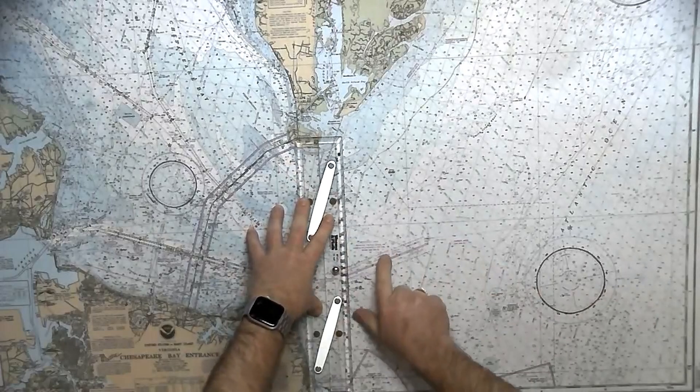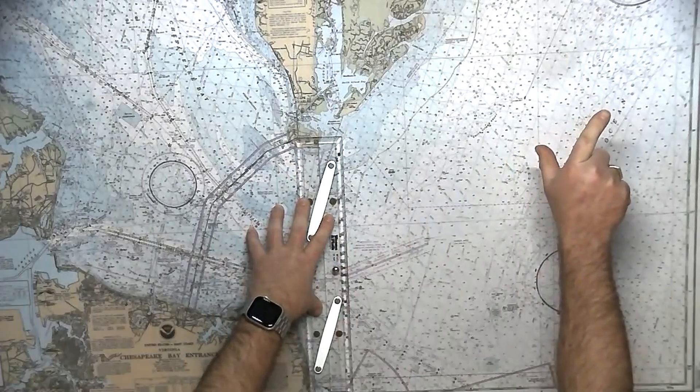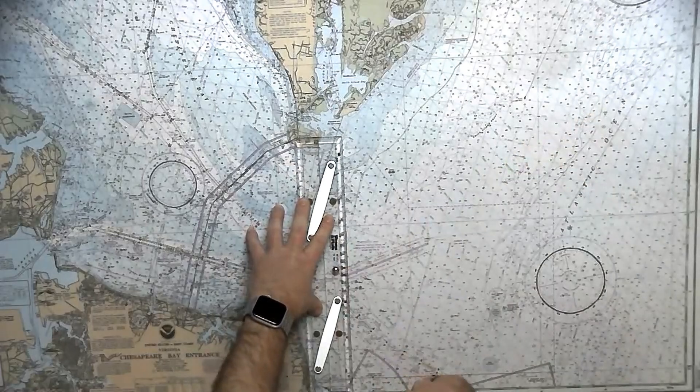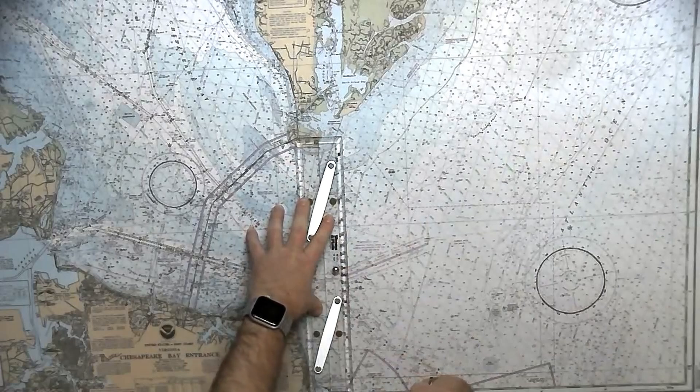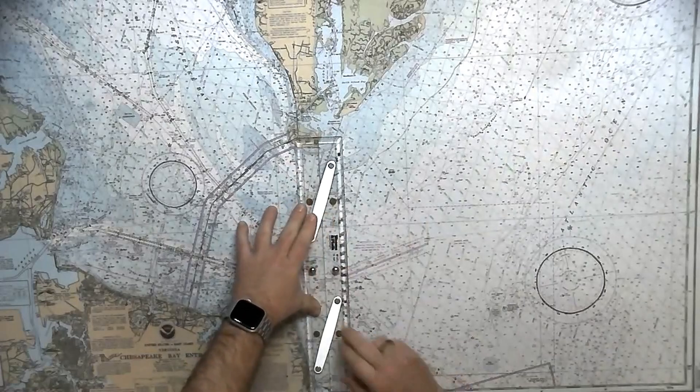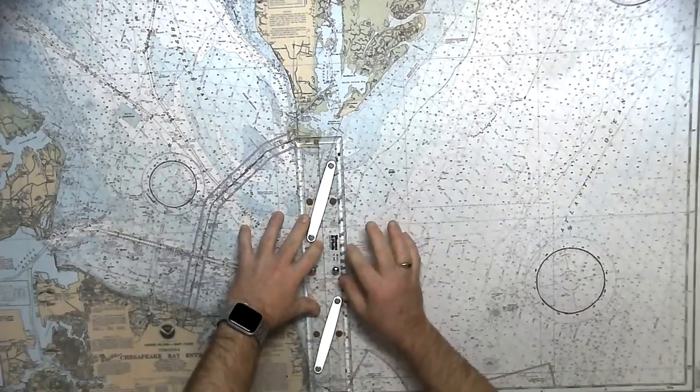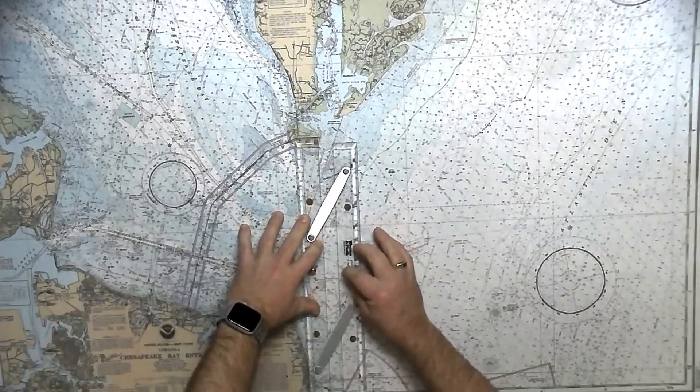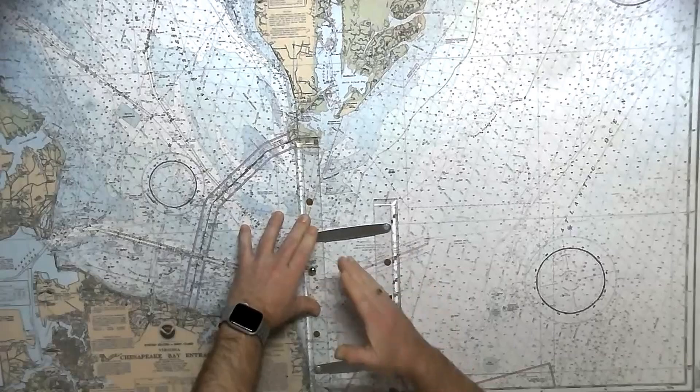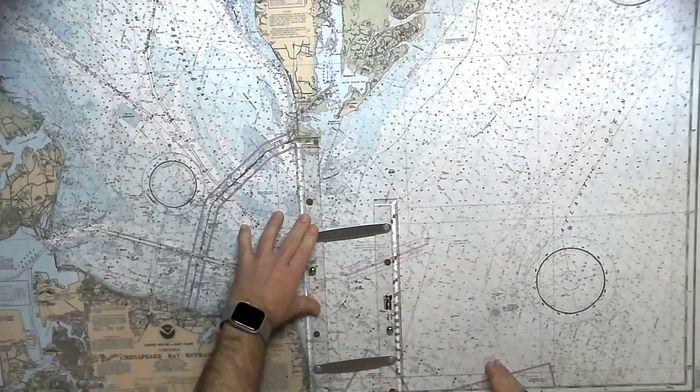Now let's say that I wanted to go at a 45 degree angle up to the compass rows in the upper right portion of the chart. Well same thing I'm going to anchor my hand on the non-moving side very firmly. I'm going to take the little knob and move it but you notice that I'm heading this way and that's not the direction I want to go.